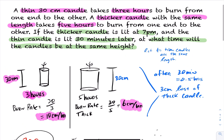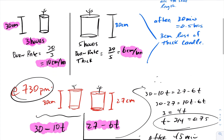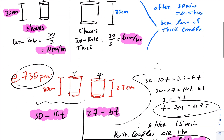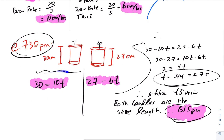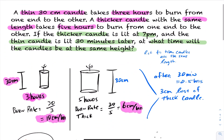That's the burning candle question. Study it, re-watch some parts, and take a look at how to calculate the rate of change, make the adjustment for that 30-minute head start the thicker candle had, and then equate the distances and solve. Thank you.